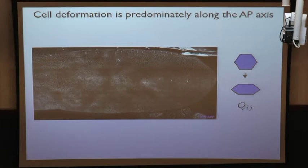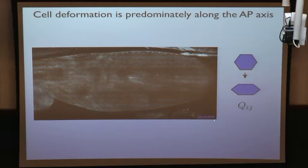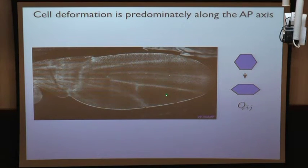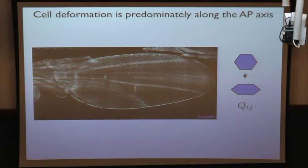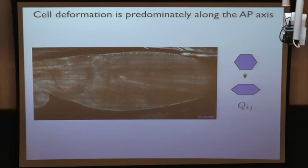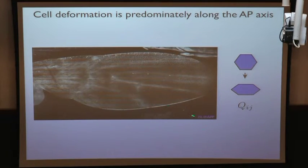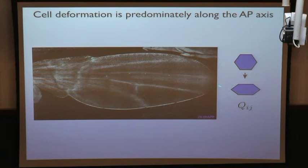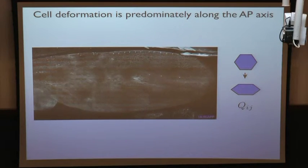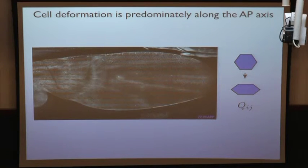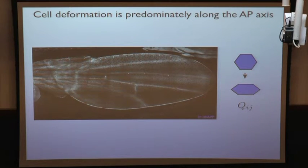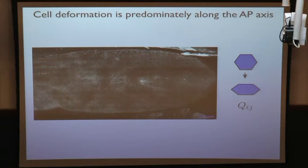We can compute the cell elongation field over the entire wing and plot it as a movie. Each point corresponds to the elongation measured on a small square. Like the velocity field — and even more clearly — the cell deformation field is very homogeneous, clearly oriented along the anterior-posterior axis. We can see that cell elongation first increases and then decreases.